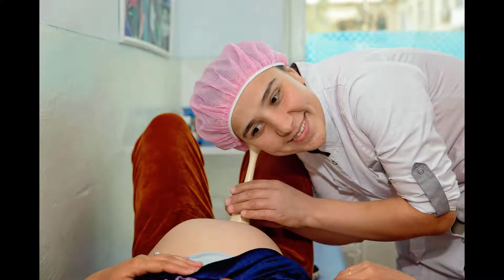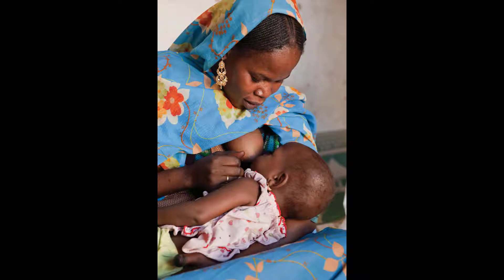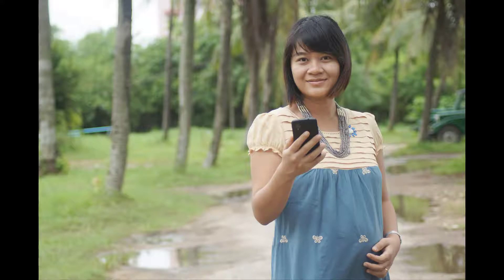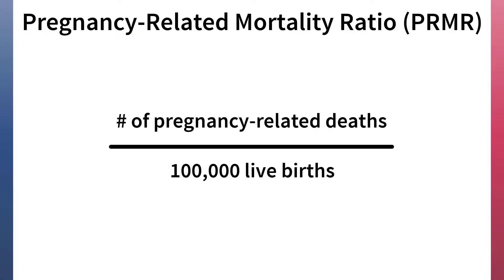The pregnancy-related mortality ratio is an indicator of particular interest to program managers and policymakers, because reducing the number of women who die during pregnancy, childbirth, or shortly after is a major global health priority. The Pregnancy-Related Mortality Ratio, or PRMR, is the number of pregnancy-related deaths per 100,000 live births.